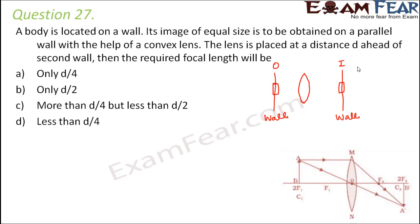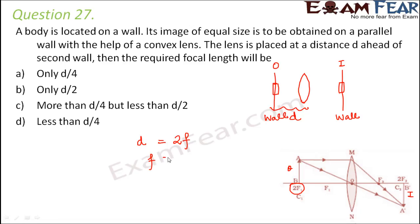From image formation for a convex lens, an equal-size image is formed only when the object is placed exactly at 2f — the center of curvature. So we must place the lens such that the object distance equals 2f. Since the lens is at distance d from the second wall, d must equal 2f. Therefore the required focal length is f = d/2. Option B is correct.